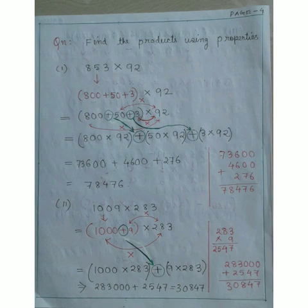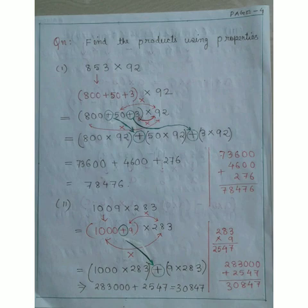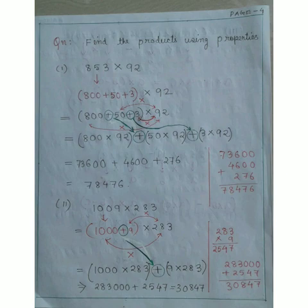Next question: find the product using properties. For 853 × 92, we expand 853 as 800 + 50 + 3. So it becomes (800 × 92) + (50 × 92) + (3 × 92). That gives 73,600 + 4,600 + 276. Adding all three quantities gives 78,476.